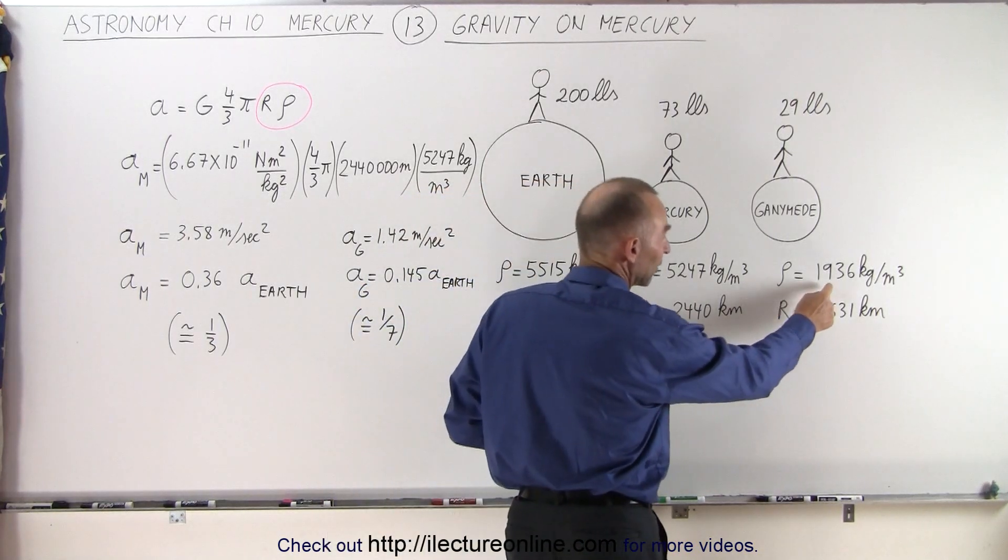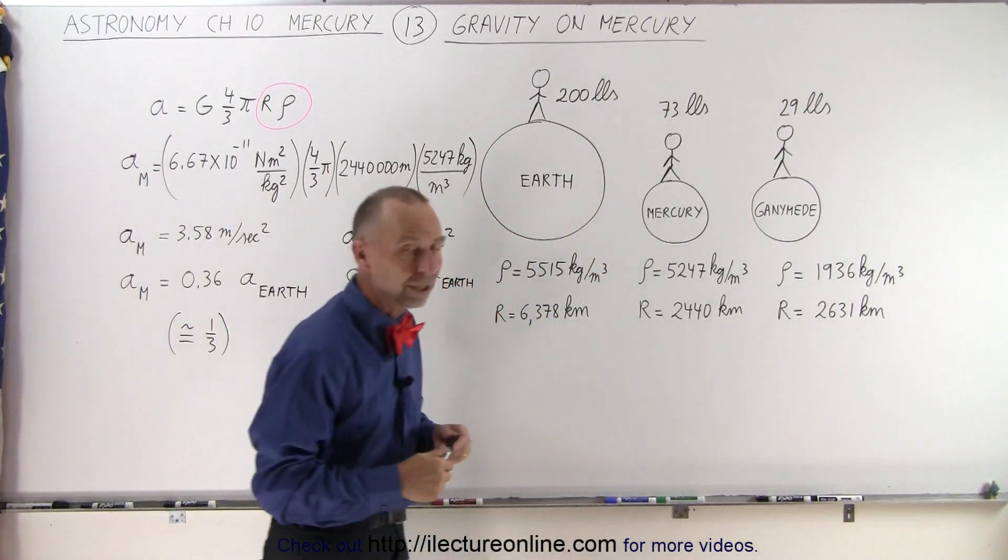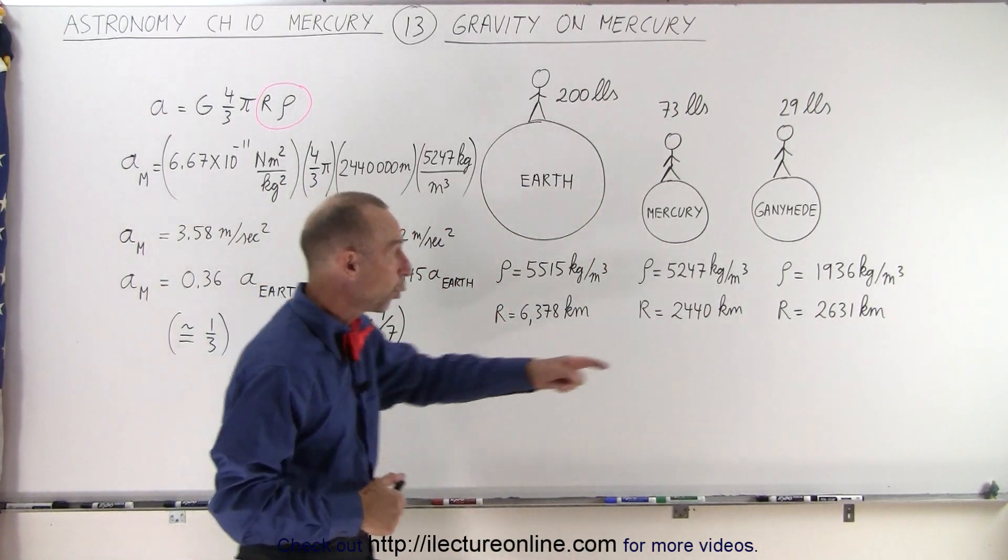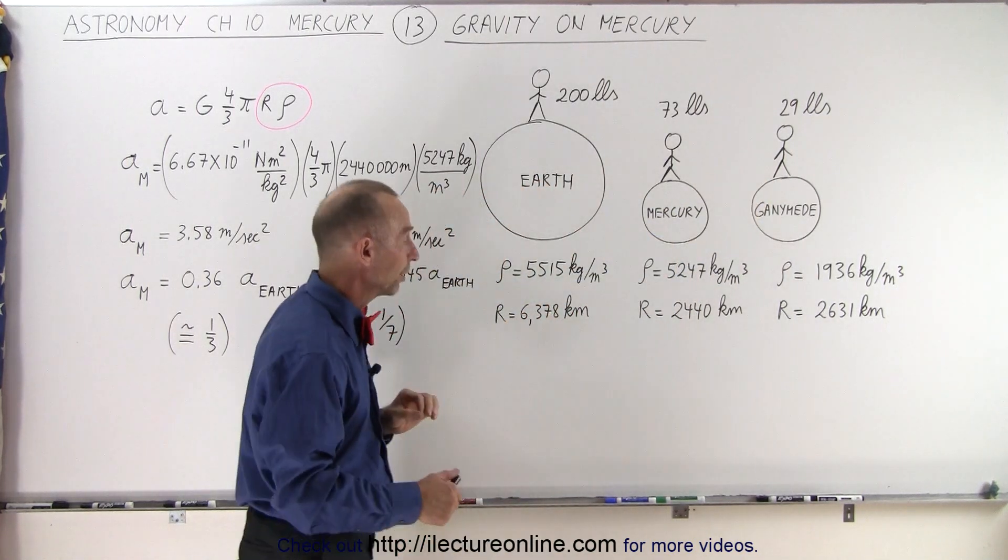Therefore, the density of Ganymede is about 1,936 kilograms per cubic meter, quite a bit less than it is for Mercury. And that's why the gravitational force is so much weaker.